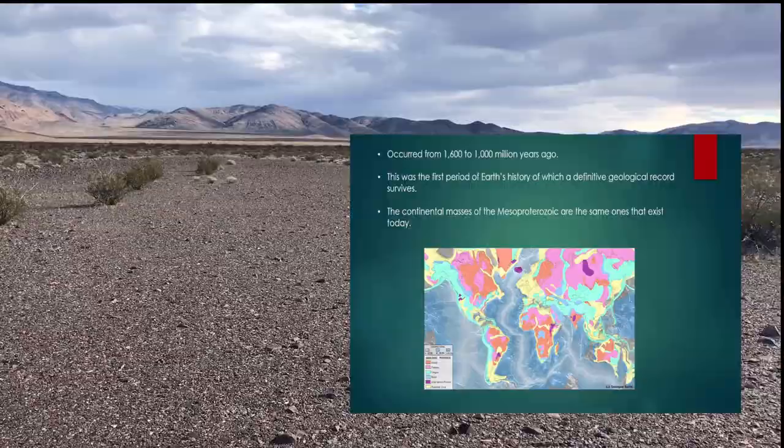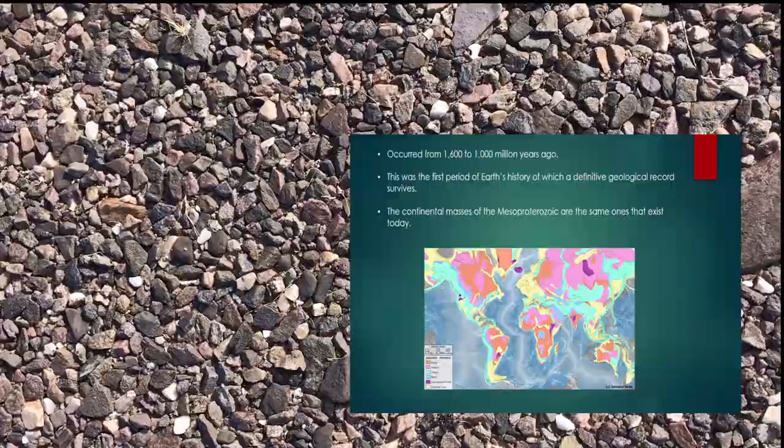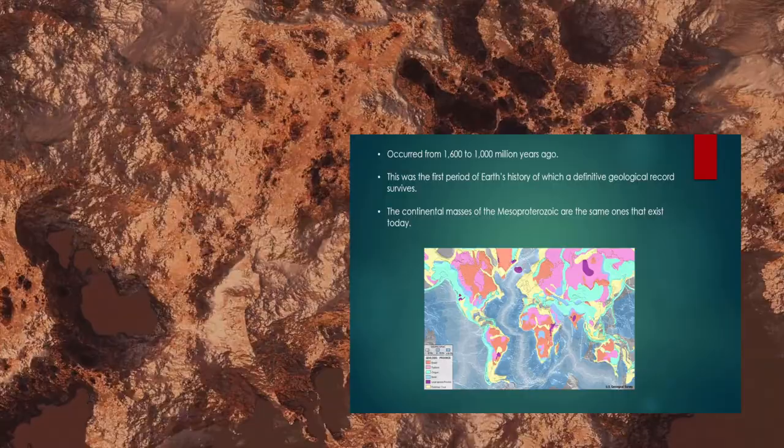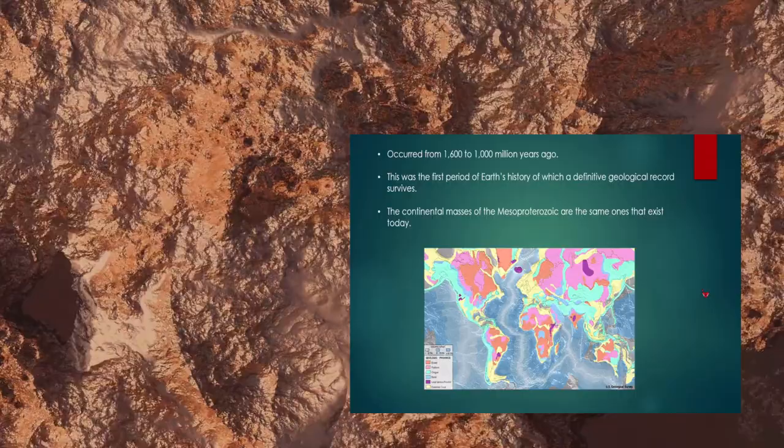This was the first period of Earth's history of which a definitive geological record survives. The continental masses of the Mesoproterozoic Era are the same as the ones that exist today on Earth. You can see an example of the current continental masses that exist today in this photograph.